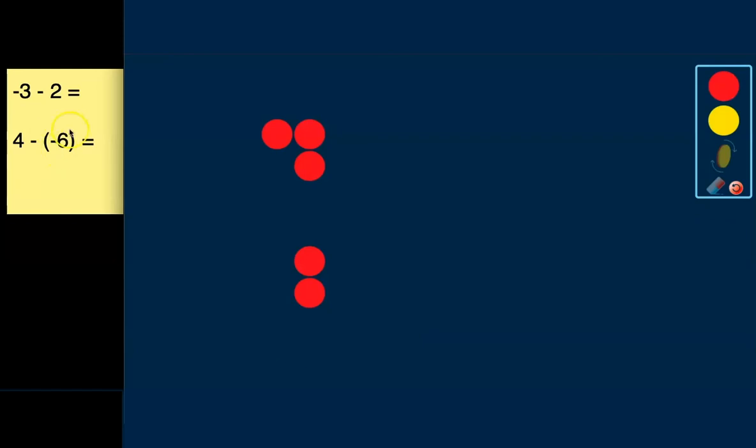And now we can solve this problem. What we're left with is 1, 2, 3, 4, 5. And remember red is negative. So we're left with a negative 5. So that's our difference. We have negative 3 minus 2 equals negative 5.